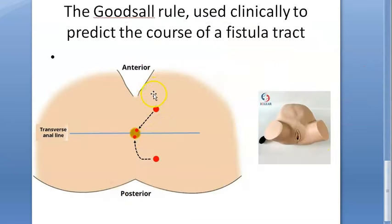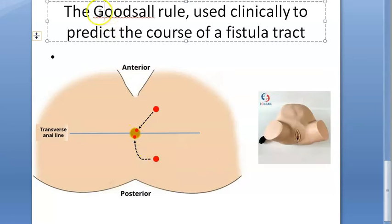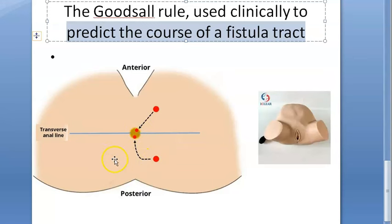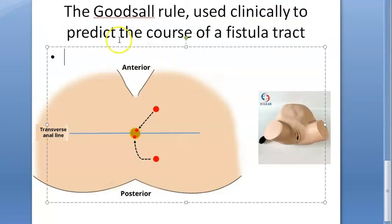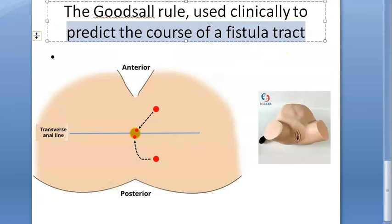One more thing: Goodsall's rule. If the opening is anterior, the fistula will be direct. If the opening is posterior, the fistula will take an indirect course. This rule helps predict the course of a fistula tract. Anterior means mostly direct, posterior means it goes indirectly. However, this rule is not perfect and can be wrong at times.